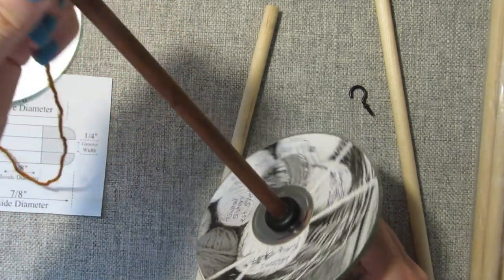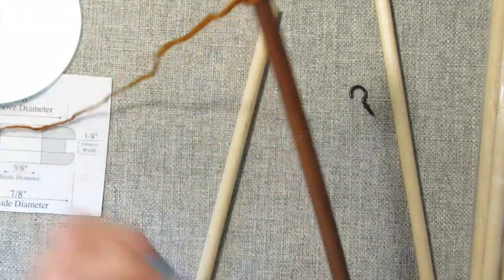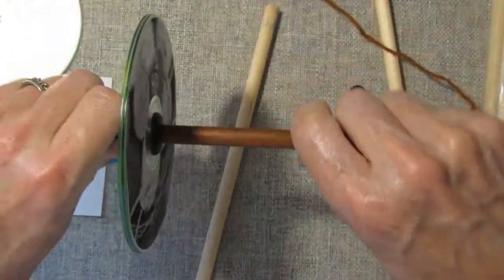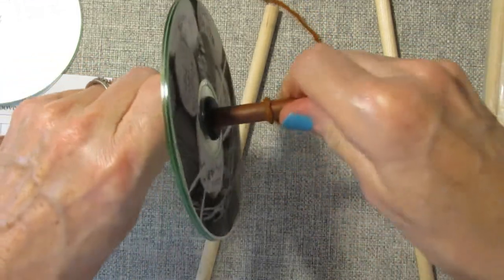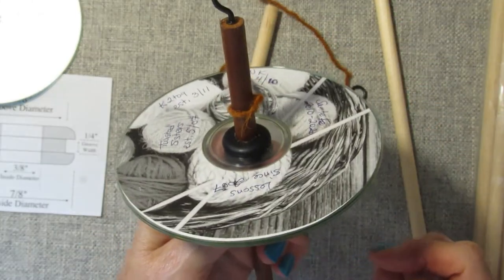If you ever want to make this a top whorl drop spindle, you just slide it up to the top end, like this, next to the hook, and that's called the top whorl.